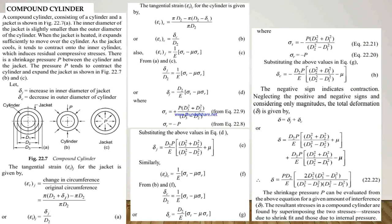Now we see the compound cylinder. In figure 22.7, we see the compound cylinder where a cylinder has a jacket fitted over it. Here d1 is the inner diameter of the tube, d2 is the outer diameter of the tube (which is also the inner diameter of the jacket), and d3 is the outer diameter of the jacket. In the cylinder, an external pressure acts on its outer surface, and in the jacket, an internal pressure acts on its inner surface. The inner diameter of the jacket is slightly smaller than the outer diameter of the cylinder.